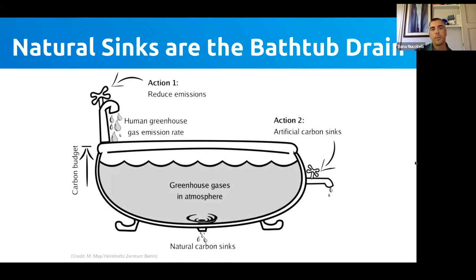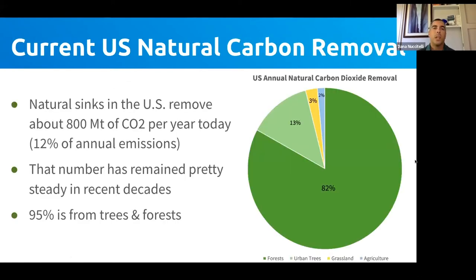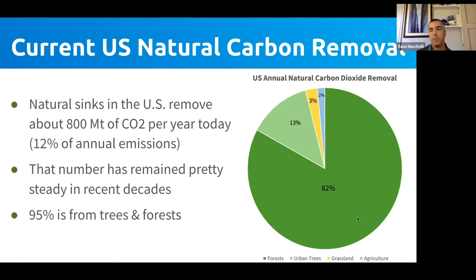Right now in the United States, natural sinks remove about 800 million tons of CO₂ per year — about 12 percent of US annual emissions. That figure has been pretty steady over the past 15 to 20 years. About 95 percent of that comes from trees and forests: roughly 82 percent from forests, 13 percent from urban trees, and a small chunk from grasslands and agriculture.